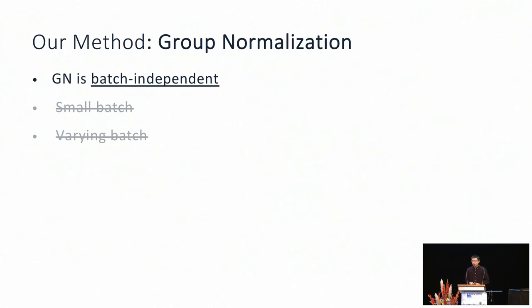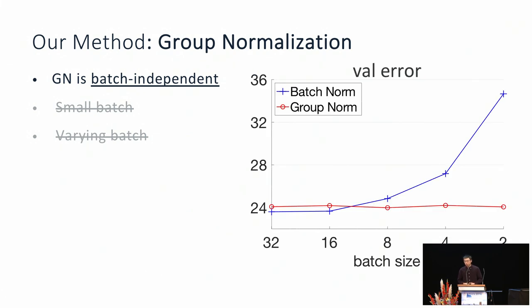In this work, we propose a new normalization method called Group Normalization. The key property of this method is that it is independent of the concept of batch. Therefore, it does not have the issues that come with the use of batch. Unlike batch norm, whose error rate increases for small batch size, group norm's error rate remains stable when trained with small batch size.